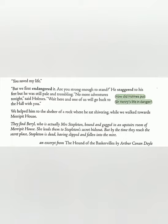They find Beryl, who is actually Mrs. Stapleton. She was introduced at the beginning as sister of Mr. Stapleton but is later discovered to be his wife. She was bound and gagged in an upstairs room of Merripit House. She leads them to Stapleton's secret hideout.